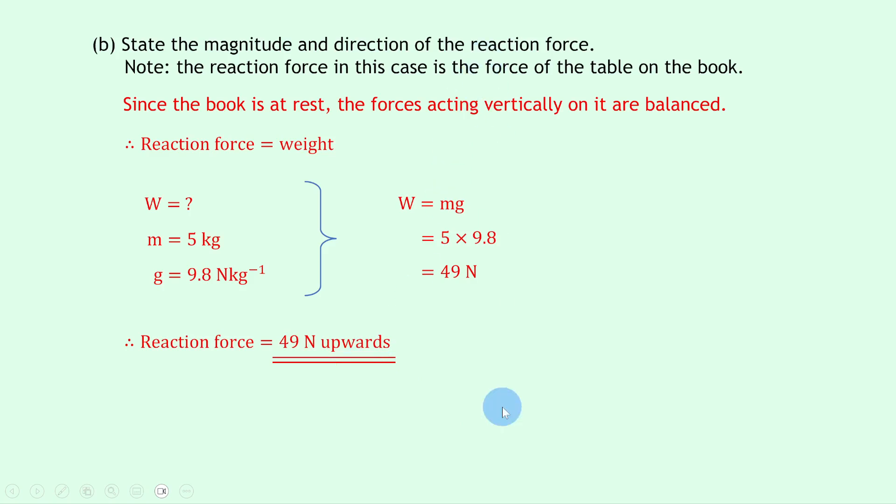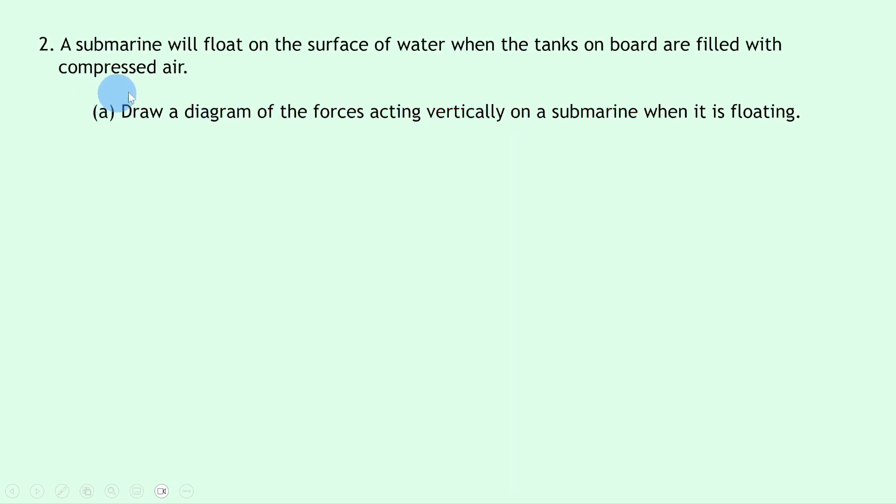Lastly, question 2 says a submarine will float on the surface of water when the tanks on board are filled with compressed air. Part A says to draw a diagram of the forces acting vertically on a submarine when it is floating. Well, let's just draw our submarine as a block and we can label the vertical forces.